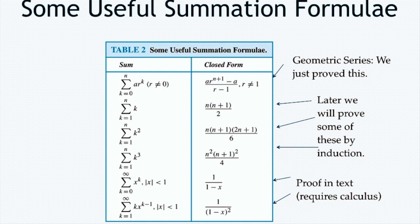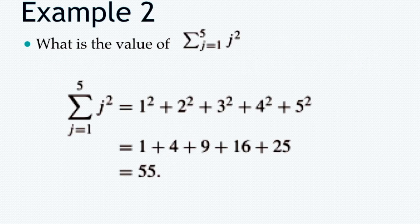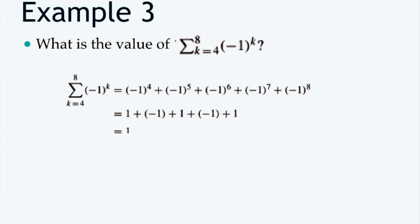As an example, to express the sum of the first 100 terms of a(j) = 1/j for j=1,2,3,...: we write sigma from j=1 to 100 of 1/j. Another example: the final value of sigma from j=1 to 5 of j² equals 55. Another example: sigma from k=4 to 8 of (-1)^k equals 1.